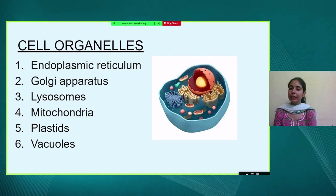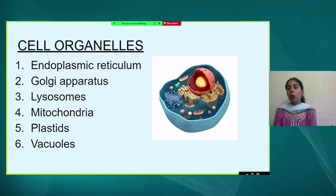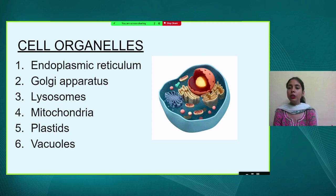Mitochondria produces ATP — the energy currency — because the cell and the whole body require energy to perform any function. Plastids are present in plant cells: chromoplast is related to colour — you must have seen the green colour of plants due to chlorophyll. The function of chlorophyll is very important for photosynthesis. Leucoplast is white or colourless and stores products in plants.